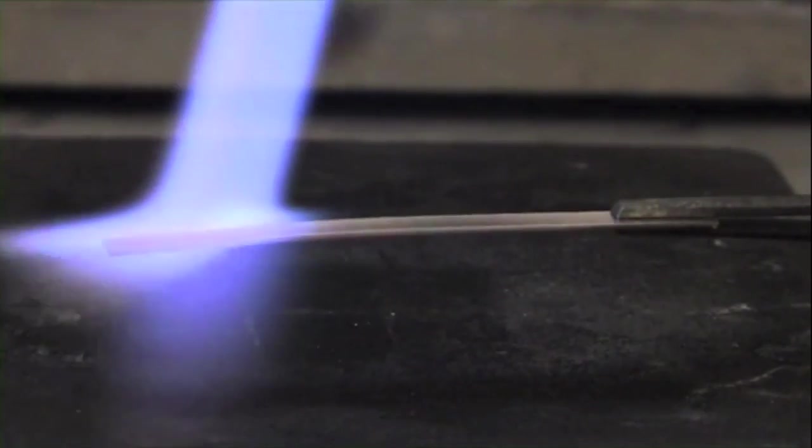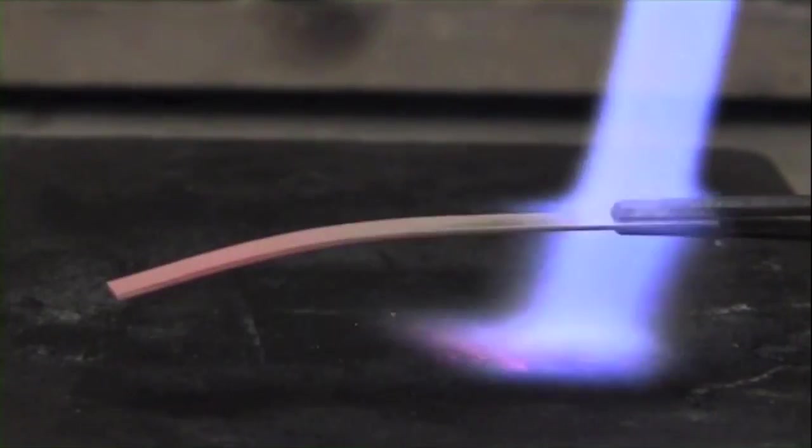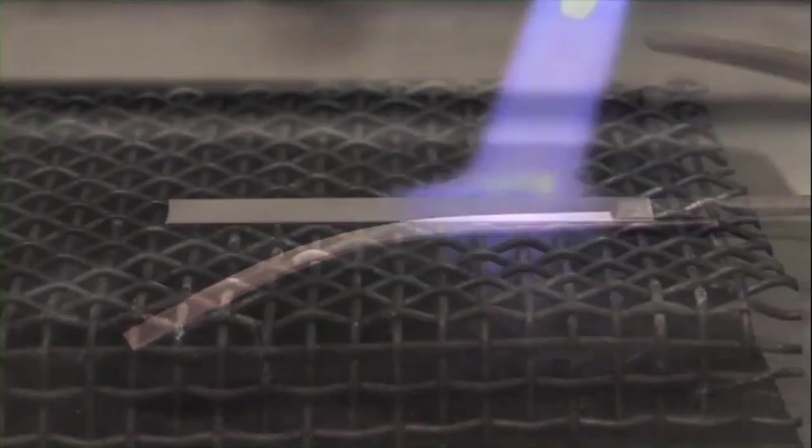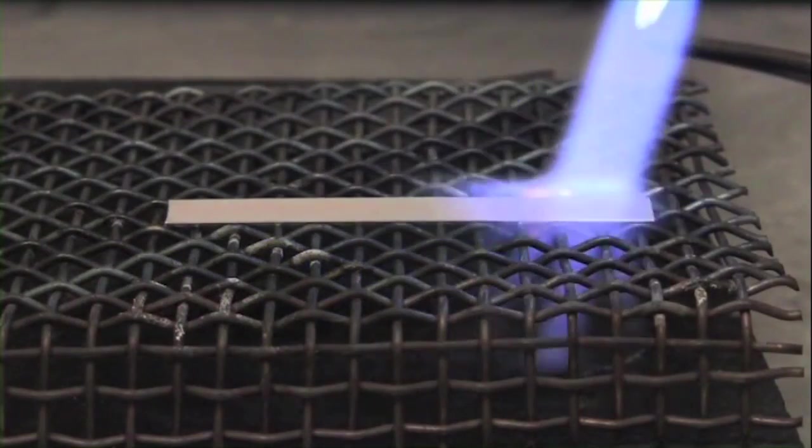When heating, your work may need to be supported or it can slump. A way to prevent this is to use a screen.